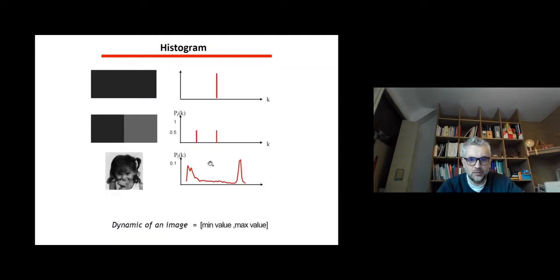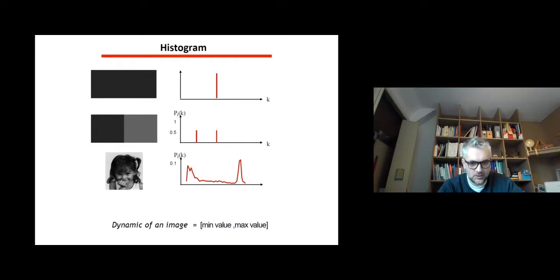How do we compute a histogram? For instance, if you have a two-pixel image where both pixels have the same intensity, the histogram has only one bin. If the two pixels have different intensities, then two gray levels appear. With many gray levels you get a distribution where the minimum value corresponds to the minimum gray level present in the image and the maximum value corresponds to the maximum gray level — that's the dynamic range of the image.